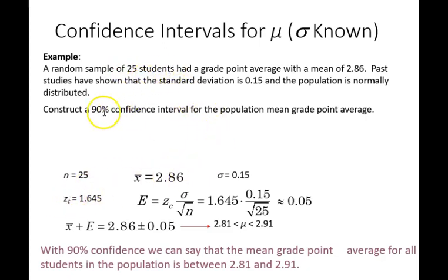Based on our 90% confidence interval, we find from the standard normal table the value 1.645. In building our margin of error estimate, we use 1.645 times the standard deviation over the square root of the sample, so 0.15 over 5, times 1.645, which gives us roughly 0.05. Therefore, when we build our interval, we have 2.86 plus or minus 0.05.